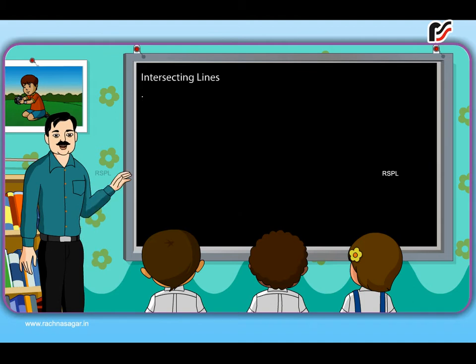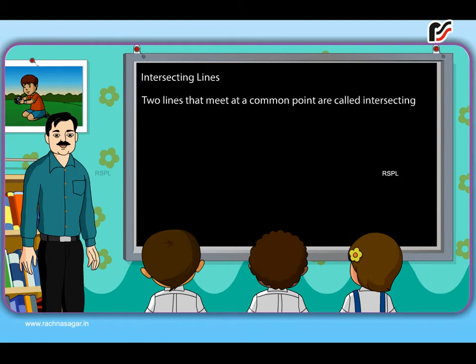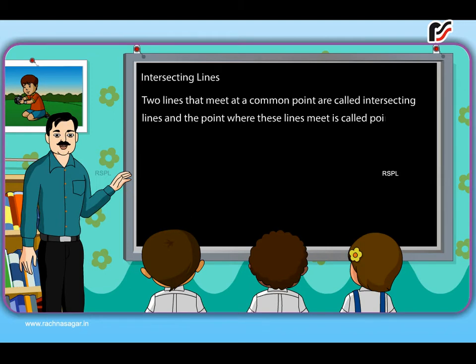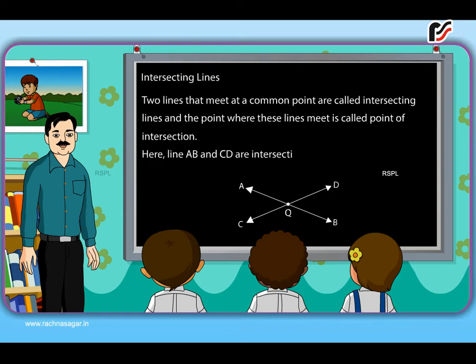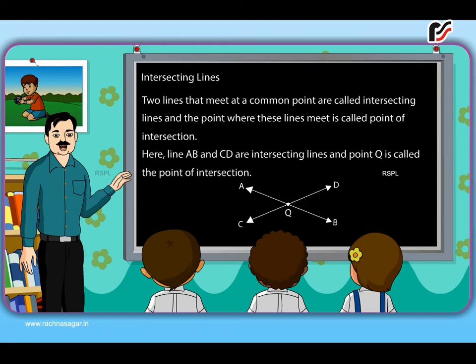Intersecting lines. Two lines that meet at a common point are called intersecting lines and the point where these lines meet is called point of intersection. Here, line AB and CD are intersecting lines and point Q is called the point of intersection.